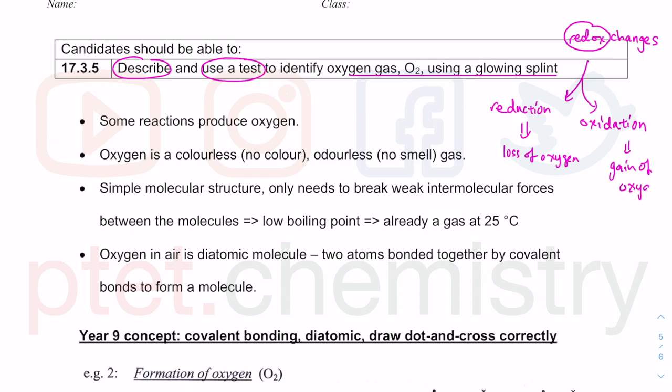As part of redox questions, they could ask you to identify oxygen. Oxygen is colorless (no color) and odorless (no smell). We are breathing in oxygen, which is around 21% of our air. We don't see it or smell it, but how can we identify that oxygen is present? We use a glowing splint.